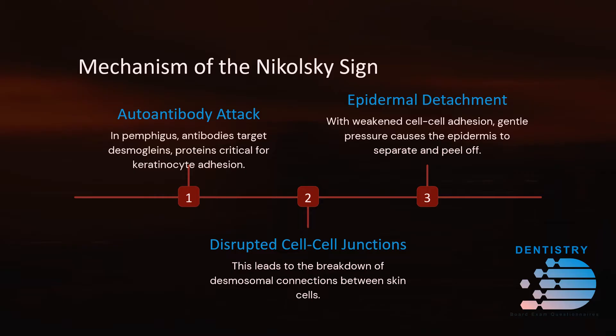Mechanism of the Nikolsky sign. First, autoantibody attack: in pemphigus, antibodies target desmoglins, proteins critical for keratinocyte adhesion. This leads to disrupted cell-cell junctions and the breakdown of desmosomal connections between skin cells. Finally, epidermal detachment: with weakened cell-cell adhesion, gentle pressure causes the epidermis to separate and peel off.